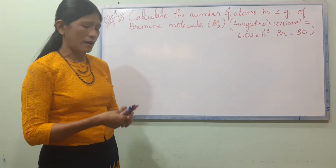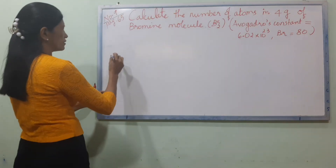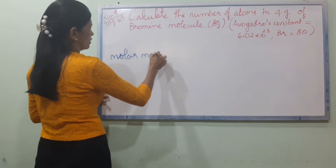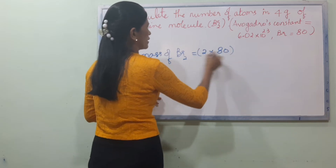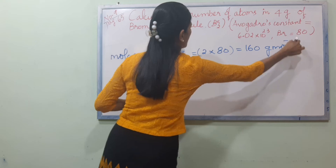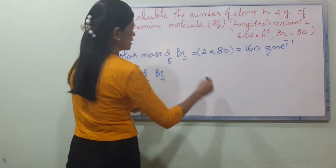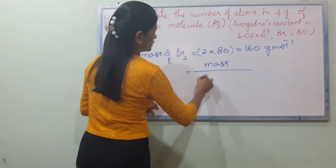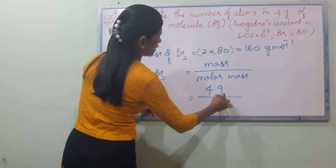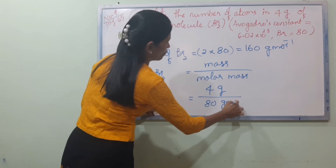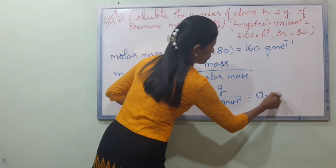The program is called the molar mass. The molar mass of Br₂ is equal to 2 into the molar mass. The number of moles: 4 grams and 80 grams. These are the last values. In each year we have 4 grams and 80 grams. It's 80 grams, and the moles are 0.025.